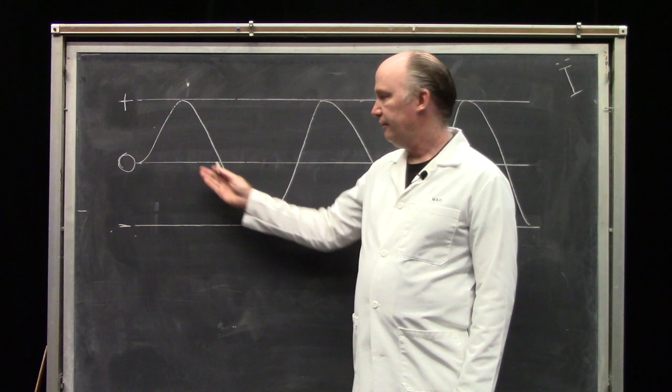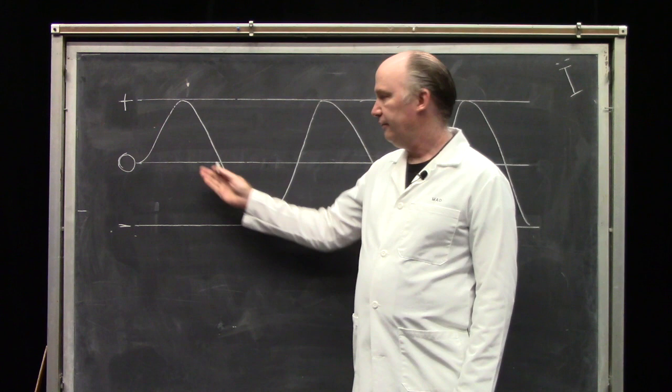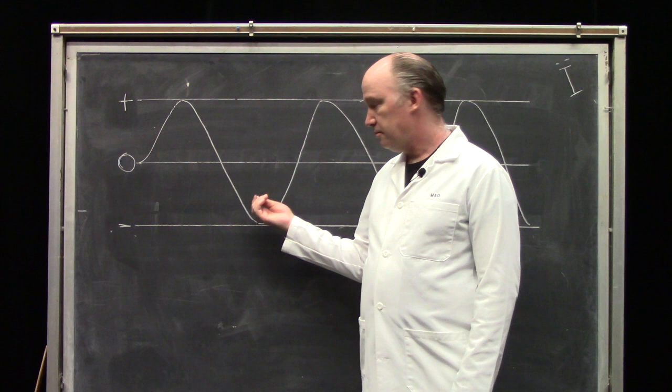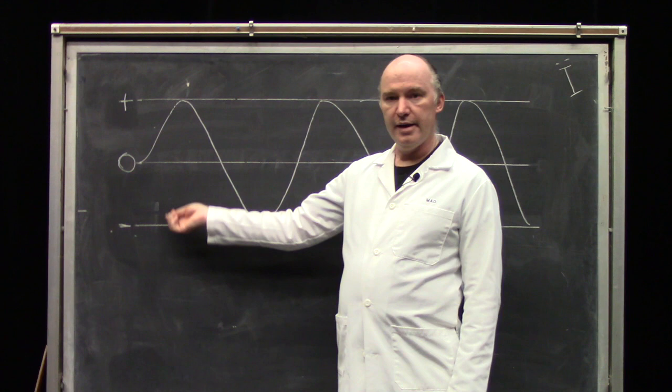So here we have an analog signal. The height of our line above or below our axis is equivalent to our positive or negative air pressure, if this was an audio signal. Now we want to turn this into a digital signal. So we will, at regular intervals, measure the height of our line and then write that down as a number.